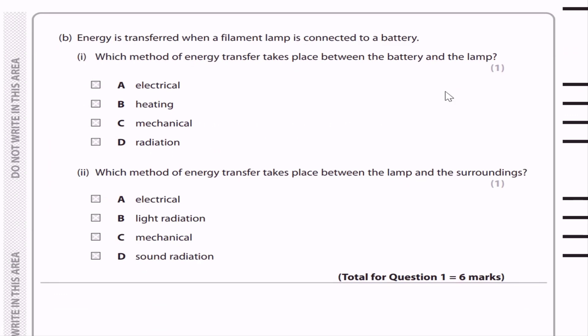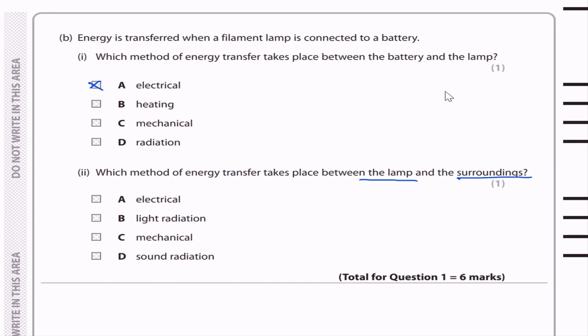Question 1b: Energy is transferred when a filament lamp is connected to a battery. Part (i): Which method of energy transfer takes place between the battery and the lamp? There are four methods of energy transfer: mechanically and electrically. Here chemical energy is stored to light energy, so the transfer method is electrical. Part (ii): Which method of energy transfer takes place between the lamp and surroundings? Light — radiation. Total for question 1 is 6 marks.